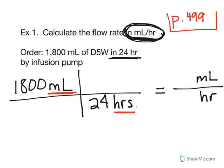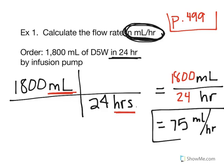So I multiply across the top and multiply across the bottom. On the top I get 1800 milliliters. On the bottom I get 24 hours. When I divide those answers out, 1800 divided by 24, I get 75 milliliters per hour as my flow rate.